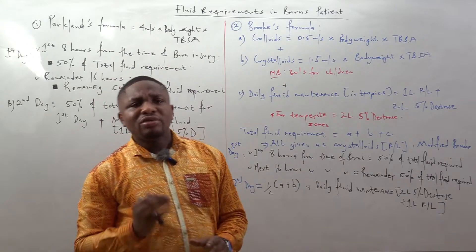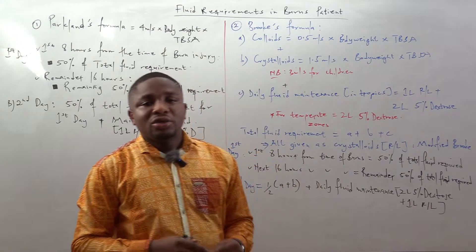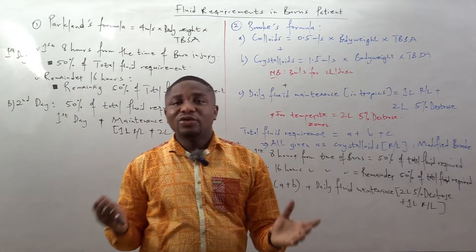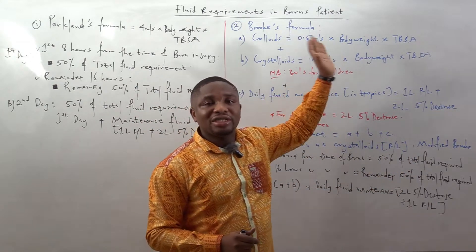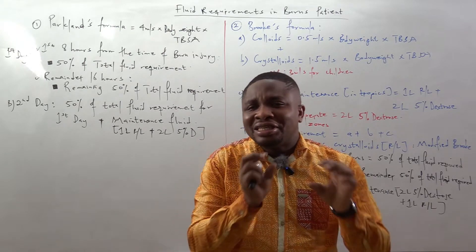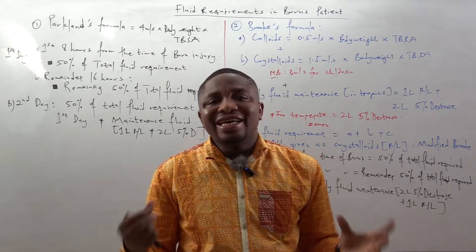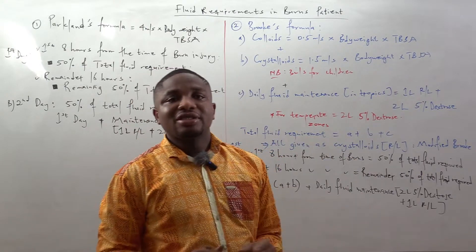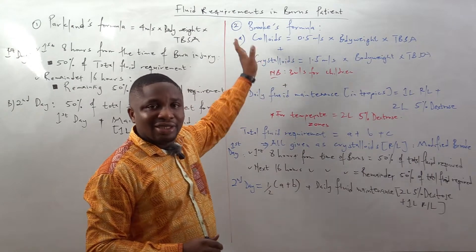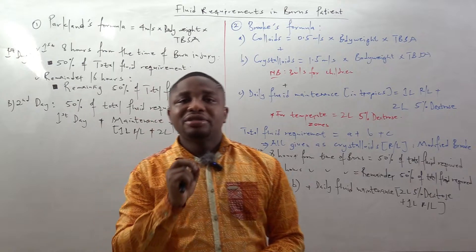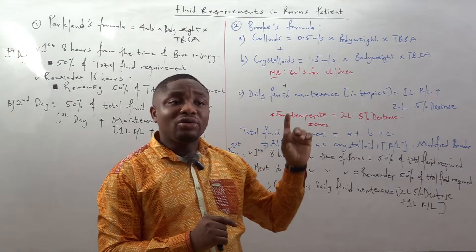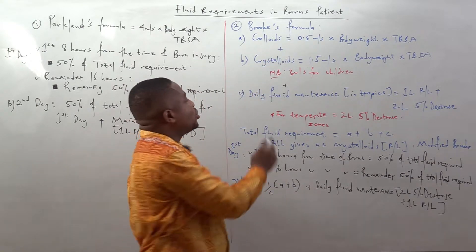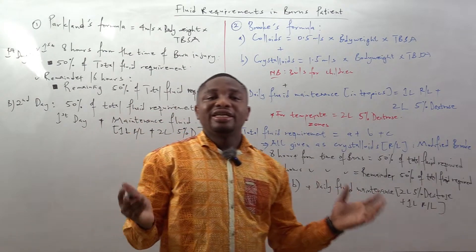Now let's talk about the Brooks formula. The Brooks formula takes into consideration colloids, crystalloids, and daily fluid maintenance. For colloids, the volume is 0.5 mL times body weight times total body surface area involved in the burn — a smaller amount because colloids are believed to easily leak out of the damaged capillaries in burns. For crystalloids, the volume is 1.5 mL times body weight times total body surface area. For the Brooks formula in children, instead of 1.5 mL, you use 3 mL.